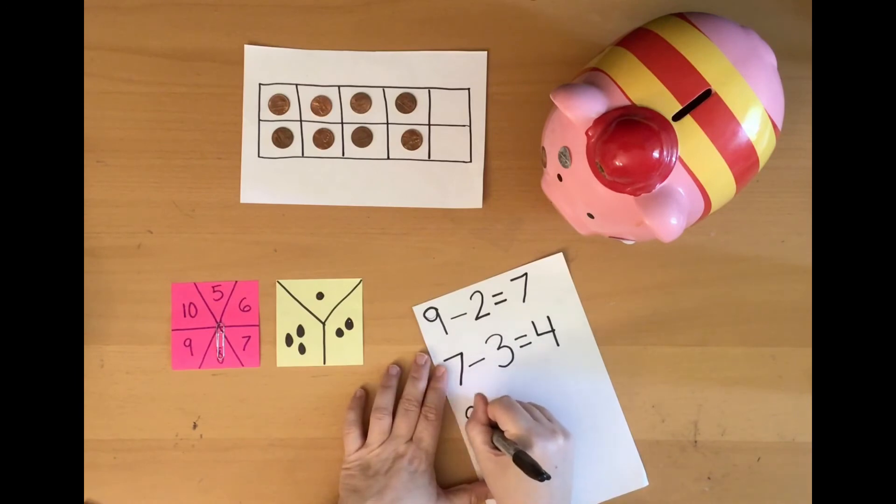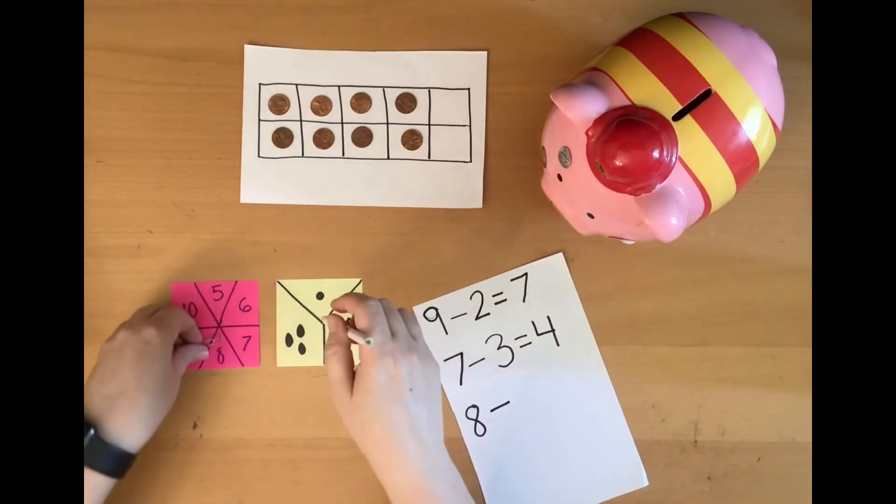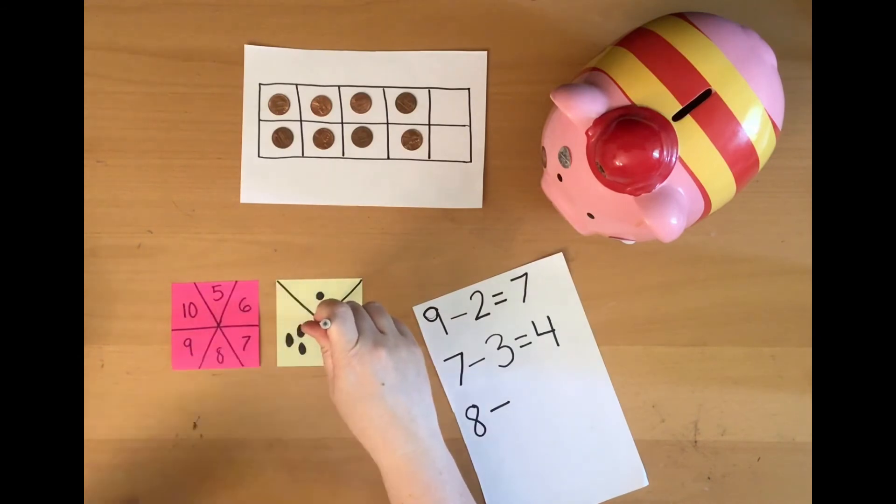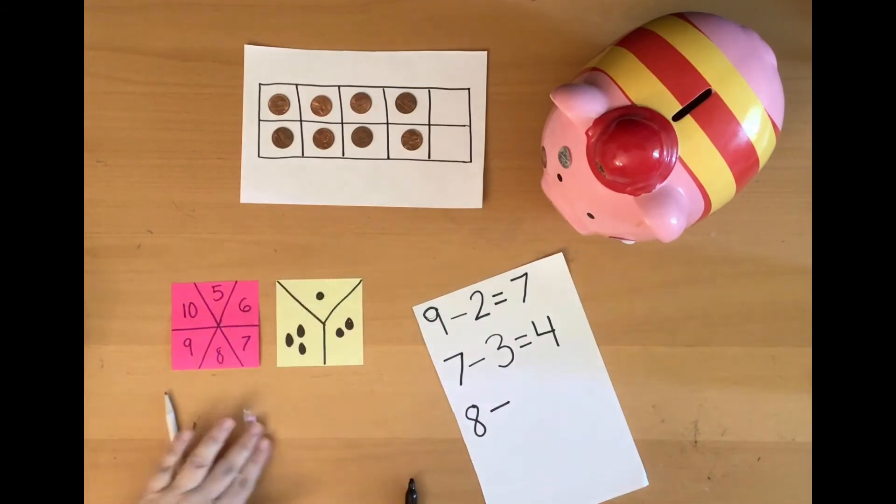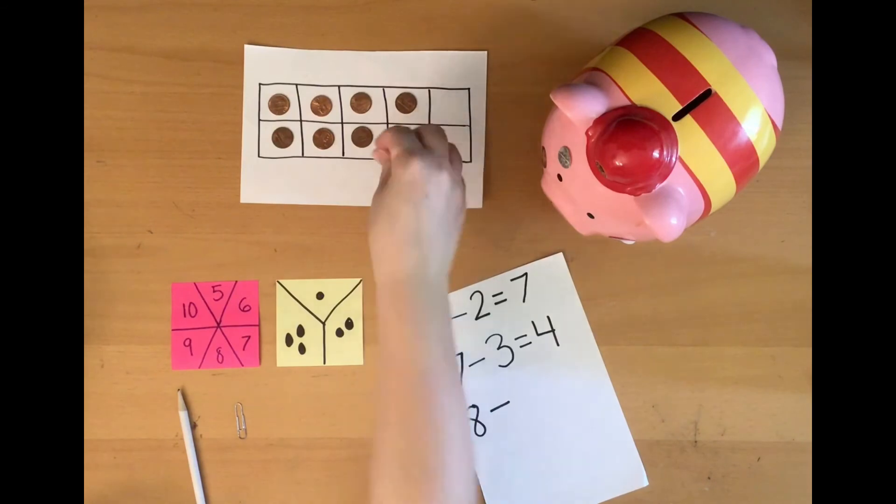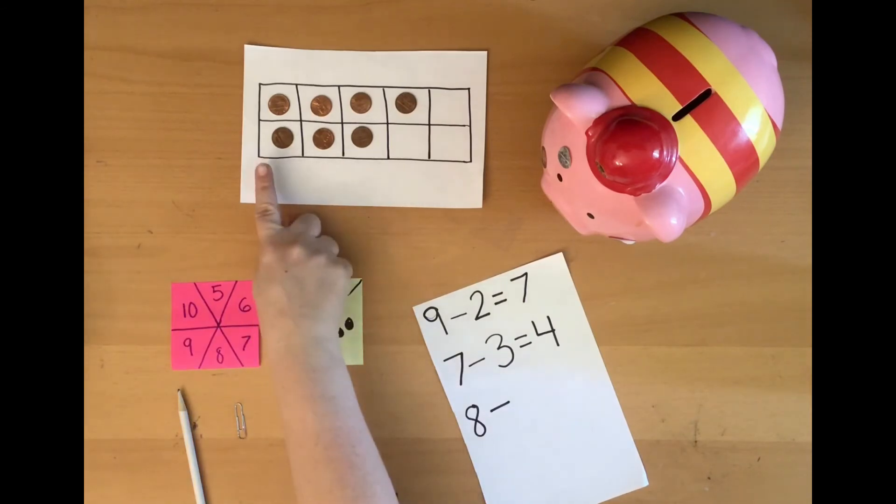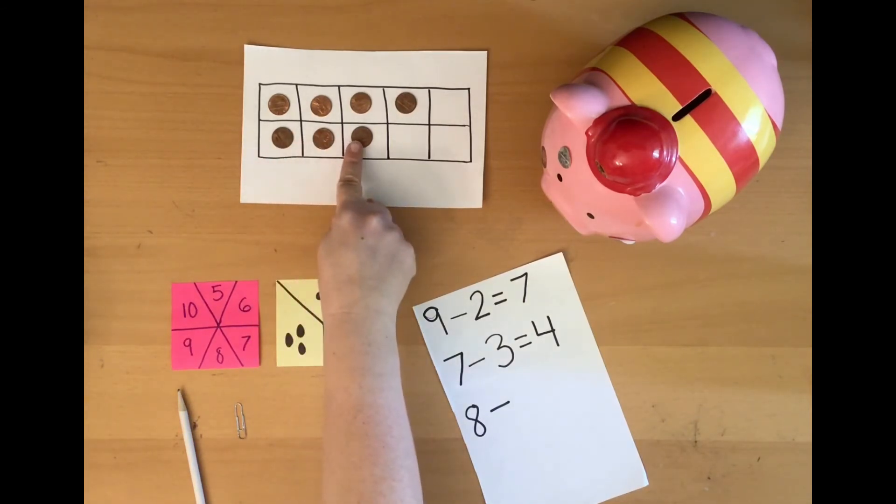All right. So we're starting with 8. And I'm going to take some away. Take 1 away and put it in my piggy bank. How many are left? I could count by 2s. 2, 4, 6, 7.